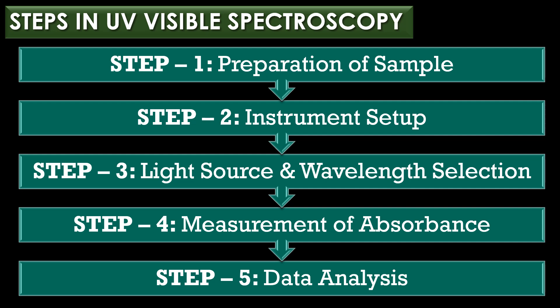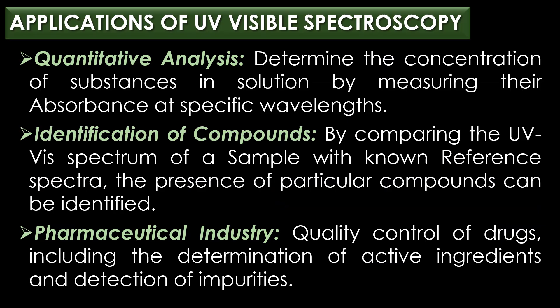The light passes through the sample and the detector measures the intensity of the transmitted light. The absorbance at each wavelength is recorded, resulting in a spectrum that displays absorbance versus wavelength. The fifth and final step is data analysis: the absorbance maxima are determined from the spectrum, and Beer-Lambert's Law can be applied to calculate the concentration of the analyte if the molar absorptivity is known.